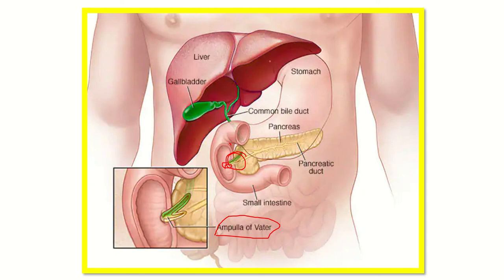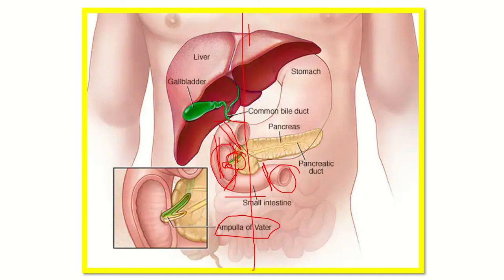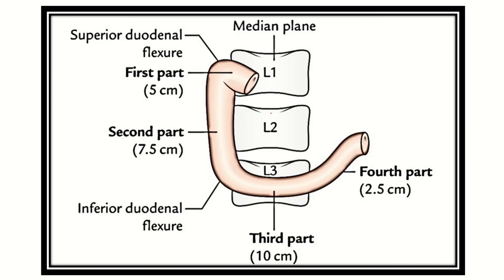Here is the midline. Up to this part is the first part of the duodenum, then the second part is the vertical part, and the third part is horizontal like the first. The ampulla of Vater drains into the second part of the duodenum, on the medial side, not the lateral side. The duodenum extends from vertebra one to vertebra three.